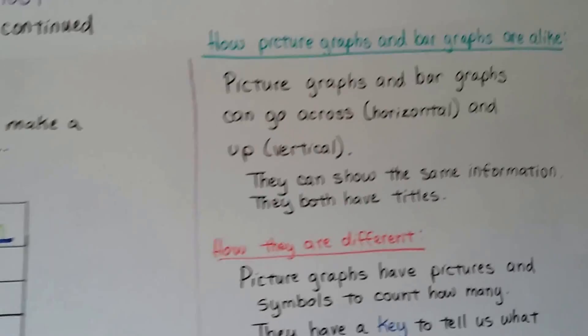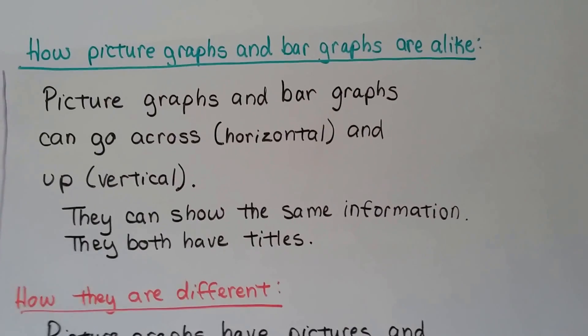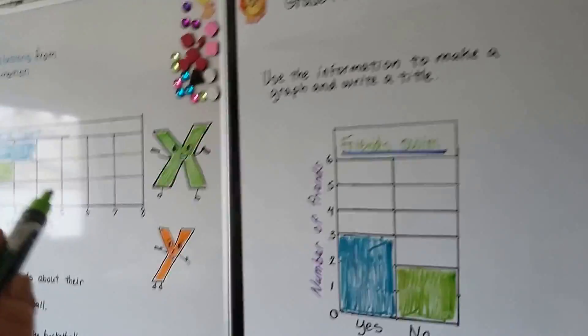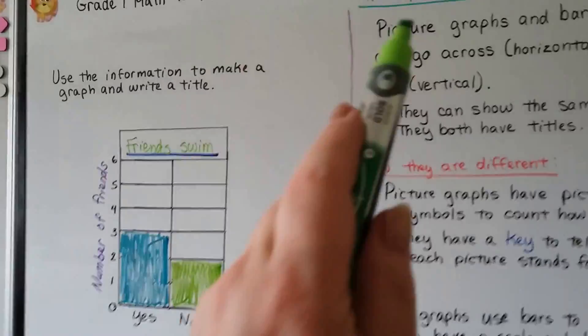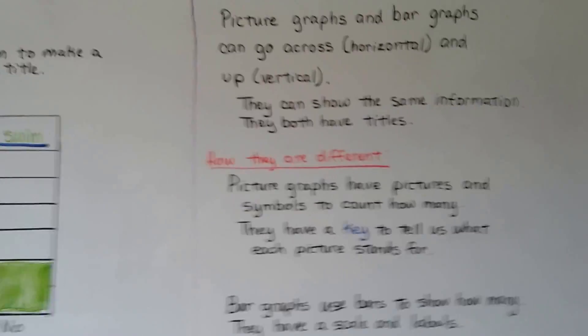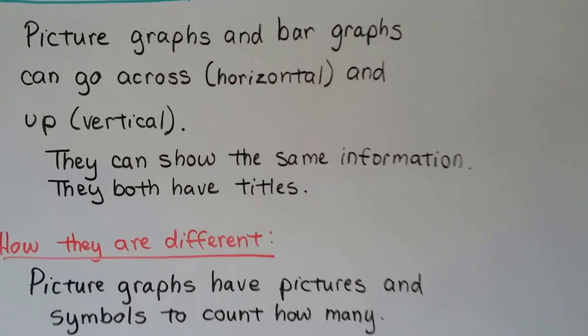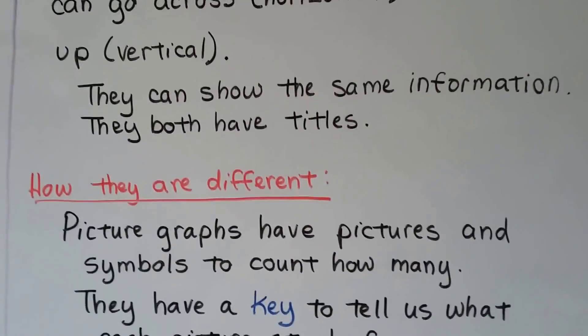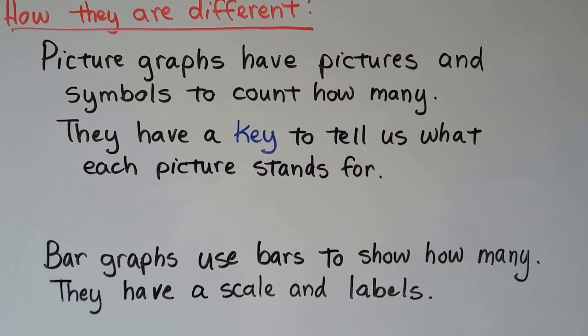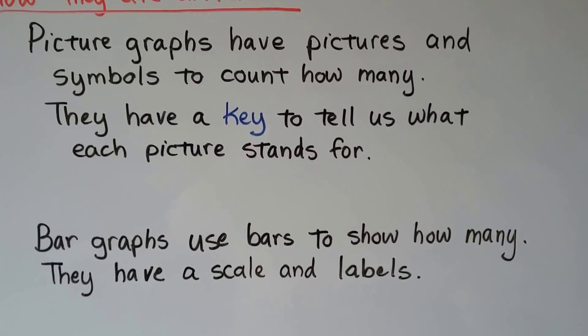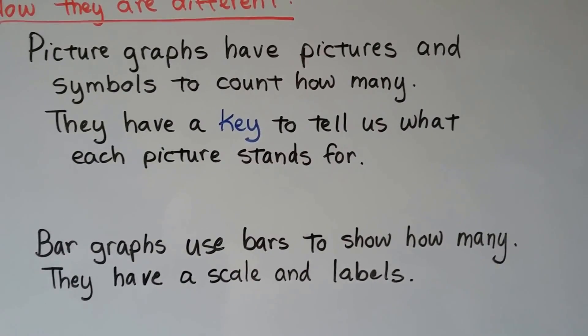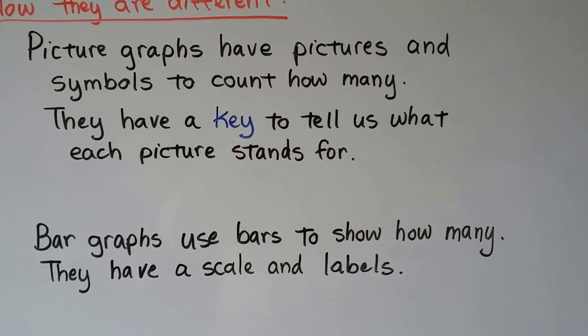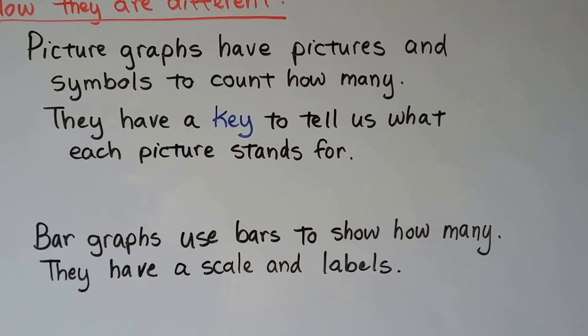So how picture graphs and bar graphs are alike? Picture graphs and bar graphs can go across horizontal like this one did here, and they can go vertical up and down like this. Picture graphs and bar graphs can do that. They can show the same information and they both have titles. How are they different? Picture graphs have pictures and symbols to count how many, and they have a key to tell us what each picture stands for. And bar graphs use bars to show how many. They don't use pictures or symbols. And they have a scale and labels instead of a key.